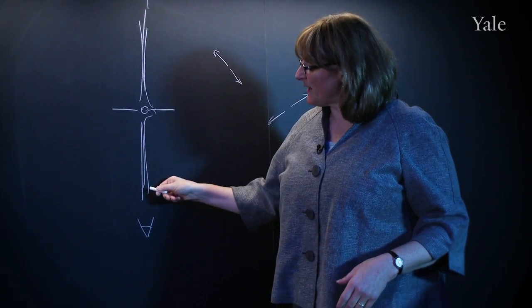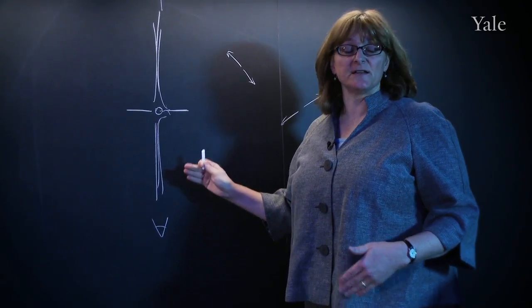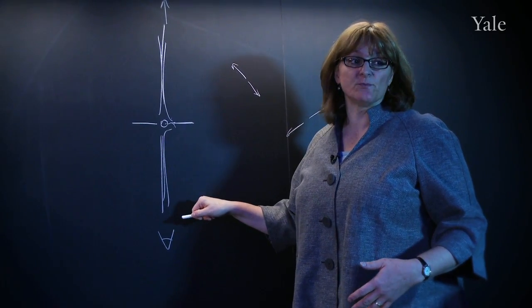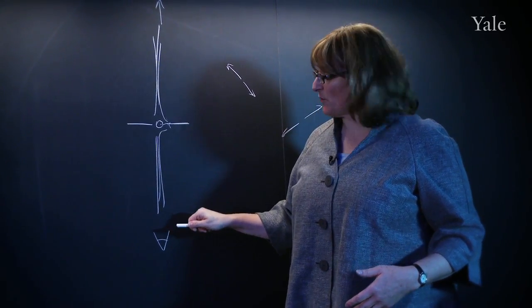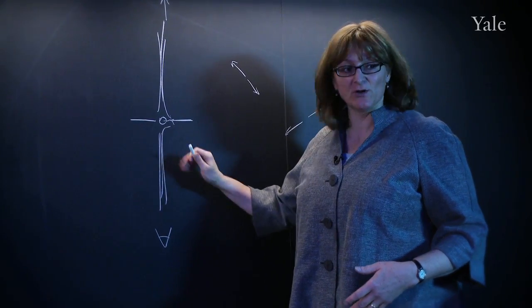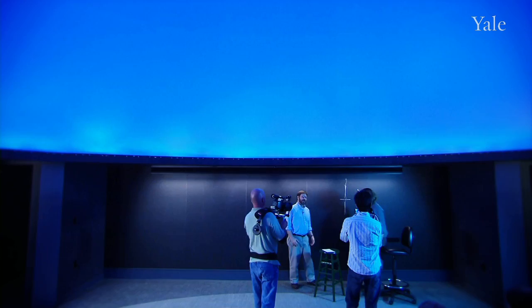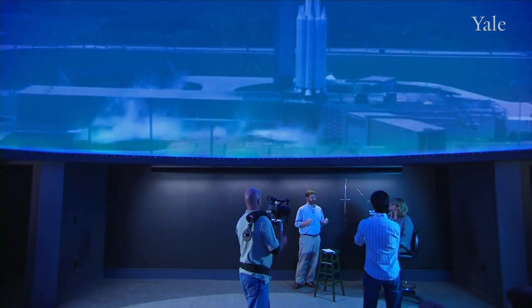But the one that is pointing at us, there's an effect of special relativity in another of Einstein's theories that makes it a thousand times brighter than it would otherwise be. So the ones where you want to study the jet and the accretion process, those are the blazars, and those are what Fermi detects.